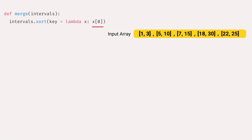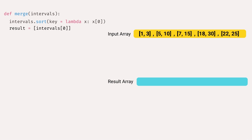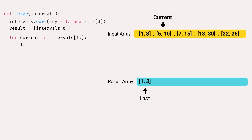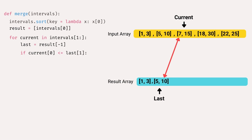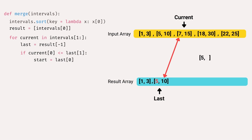In this case, x stands for the interval, and sorting will be based on x[0], the start time of the interval. If I wanted to sort by end times, this would be x[1]. After that, I create a results array initialized with the first interval. I then start a for loop that iterates through the intervals starting from the second interval at index 1. The loop variable current represents the current interval being processed, and last interval is the last added interval in the results array.